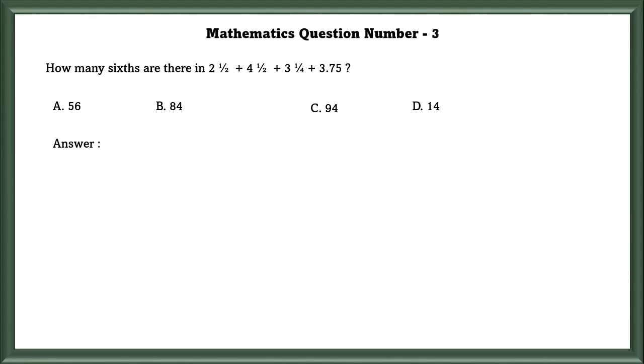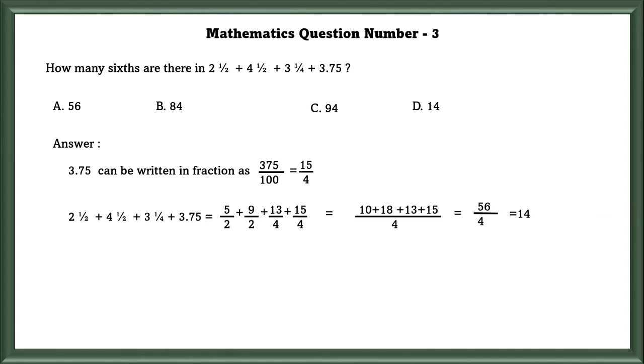Mathematics Question Number 3: How many sixths are there in the given equation? Since all of the other equations except 3.75 are in fractional form, we will convert that also into fractional form, which is equal to 15/4. Now we have to convert these mixed fractions into improper fractions, then take LCM and add them. If we add, we get 56/4 which is equal to 14.